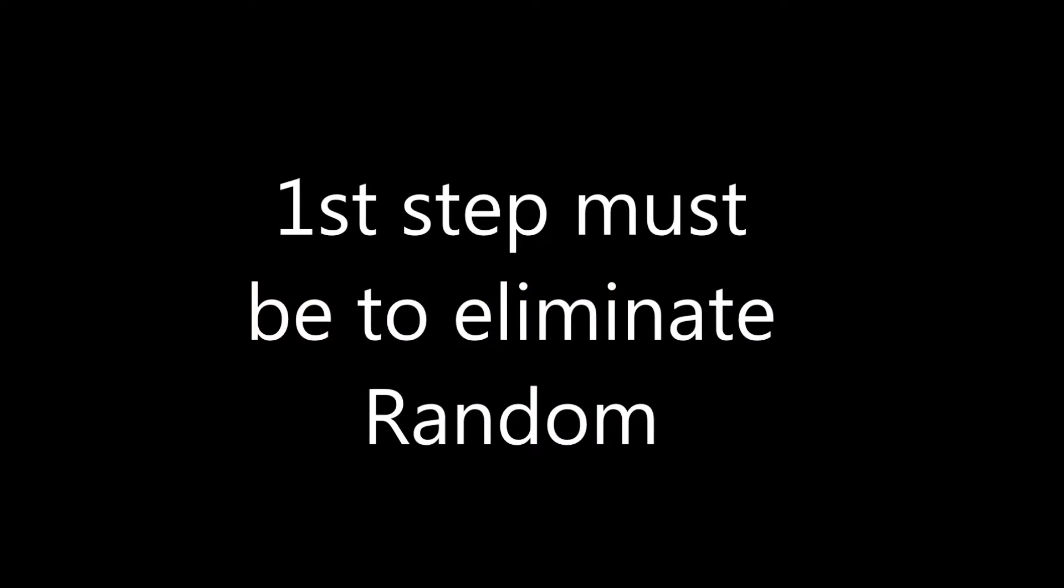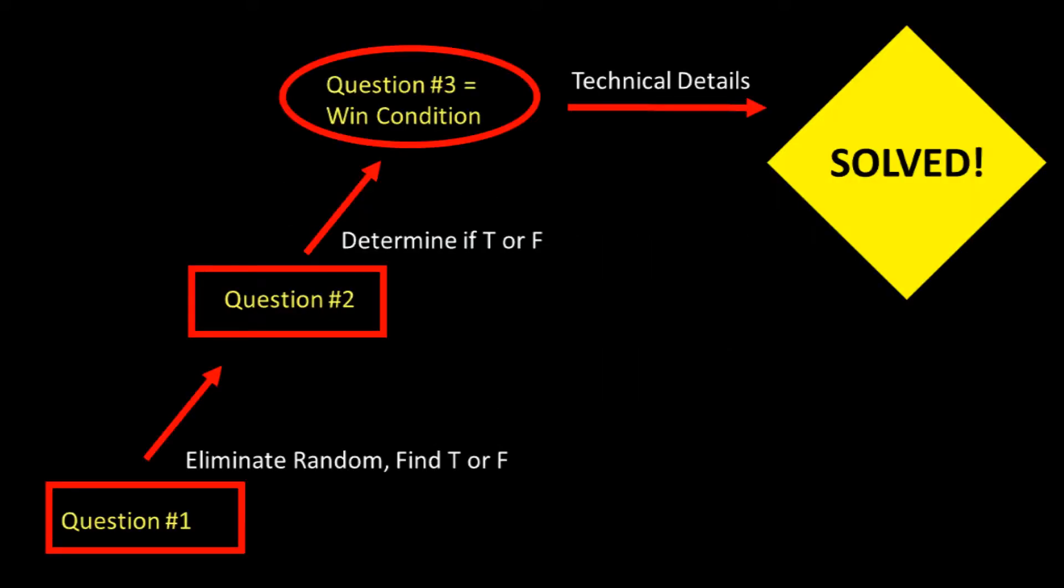Therefore, we should spend our first question eliminating Random. If we can eliminate Random, we must be talking to either Truth or False. I got to this by working backwards, but you can also realize a fundamental aspect of this riddle. If you might be accidentally asking Random a question, almost every question becomes meaningless. One way or another, you need to find a way to eliminate Random if you want to solve this riddle.